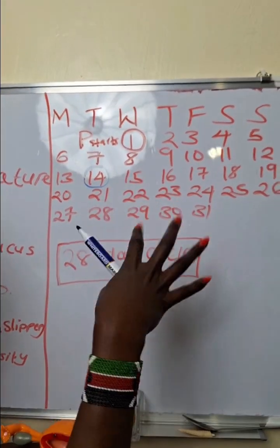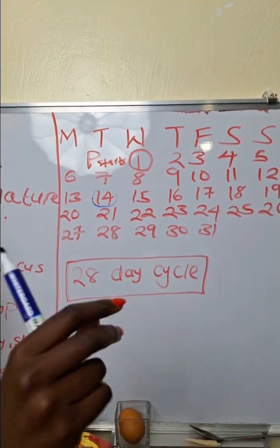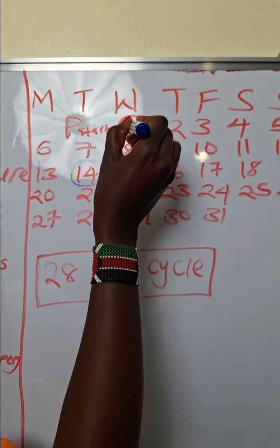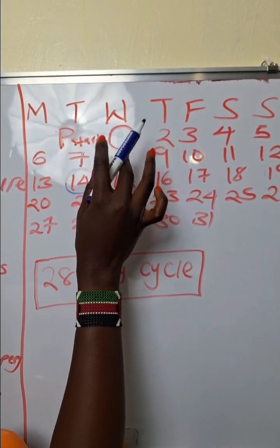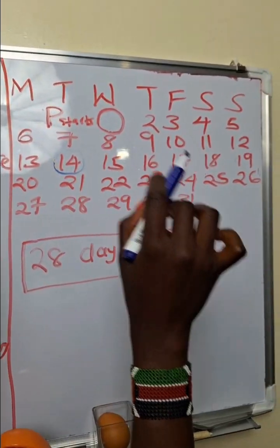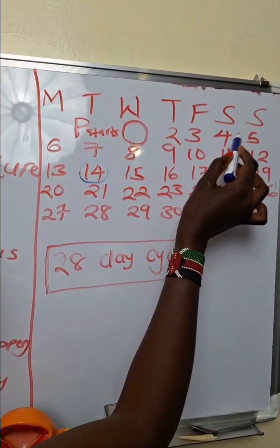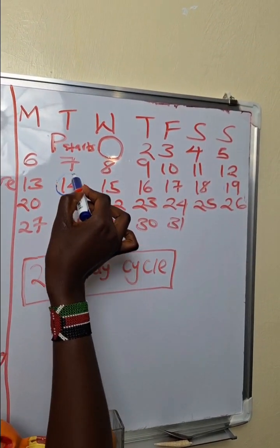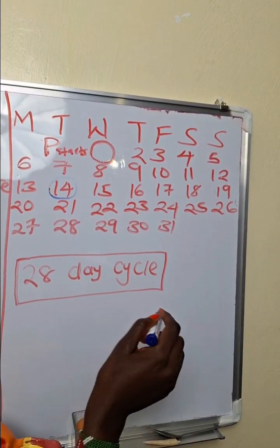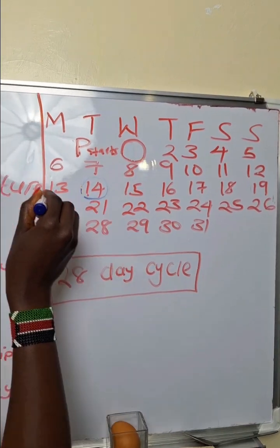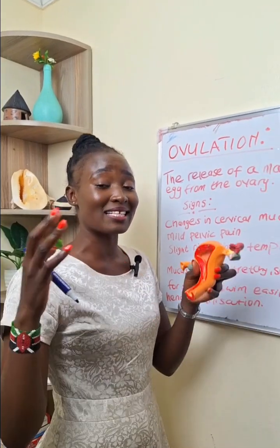Let me show you on our calendar when exactly the release of an egg happens in your menstrual cycle. Let's say this is the first day and you're beginning your period right here. You count 14 days from the day you start your periods — one, two, three, four, five... twelve, thirteen, fourteen. That's why I circled day 14. Therefore, for a 28-day cycle, you ovulate on your 14th day.